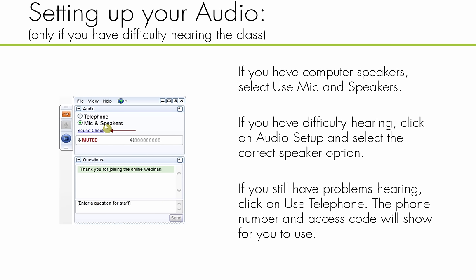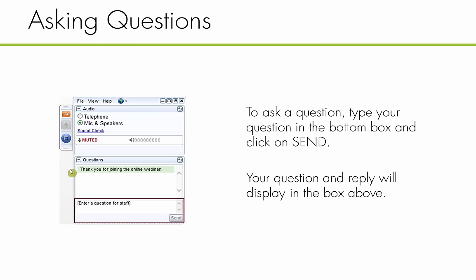If you're not able to hear correctly, feel free to select the sound check and that will help adjust the different levels in GoToWebinar. If that's still not working, just select the telephone radio button and a phone number will pop up so you can dial in. The next area is questions — type in any question throughout today's webinar. If you don't see the larger area it will minimize to a small toolbar, so select that orange arrow button to restore the larger area.